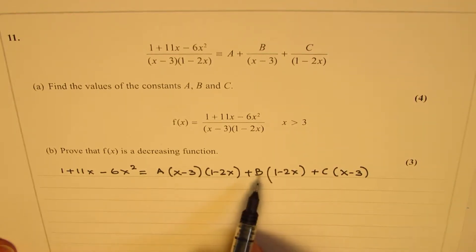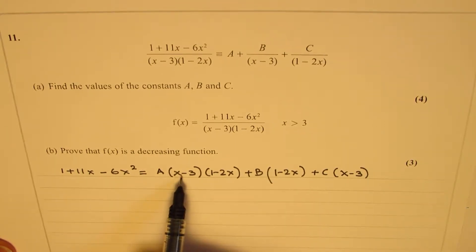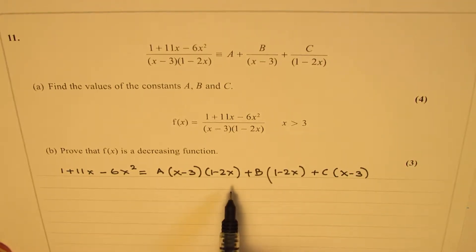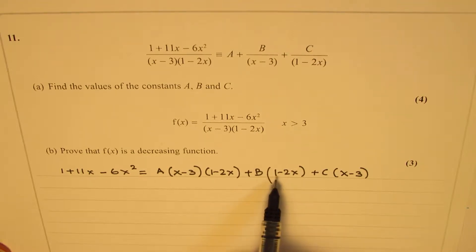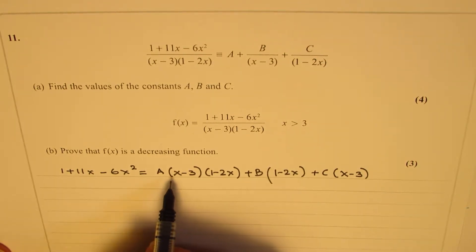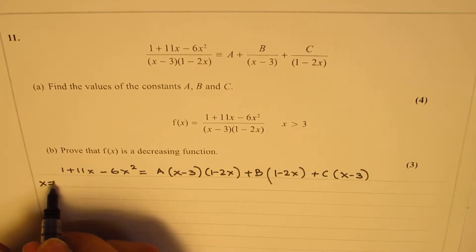To find the values of a, b, and c, the technique is to substitute strategic values of x. We can substitute x = 3, which makes certain terms 0, allowing us to find b. And if we substitute x = 1/2, we can eliminate b and find c. So that's what we are going to do — first substitution: let's put x = 3.